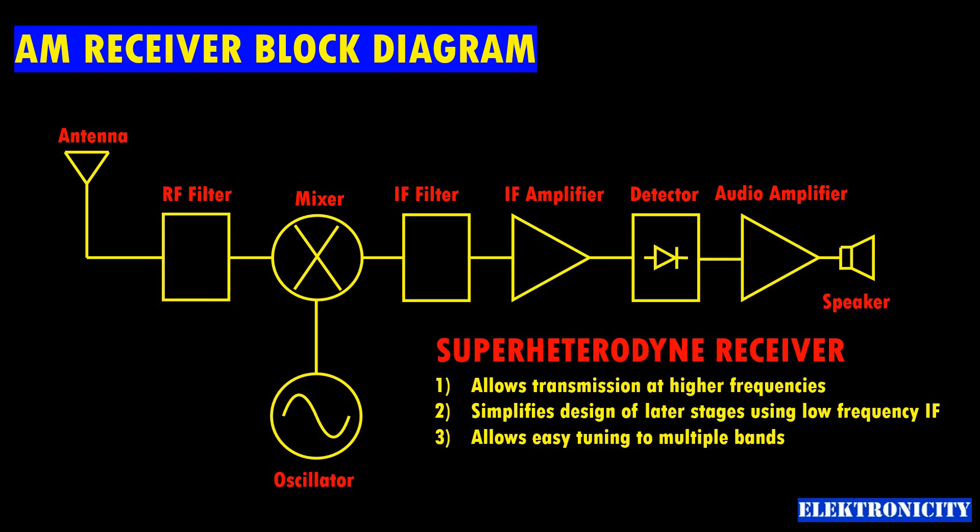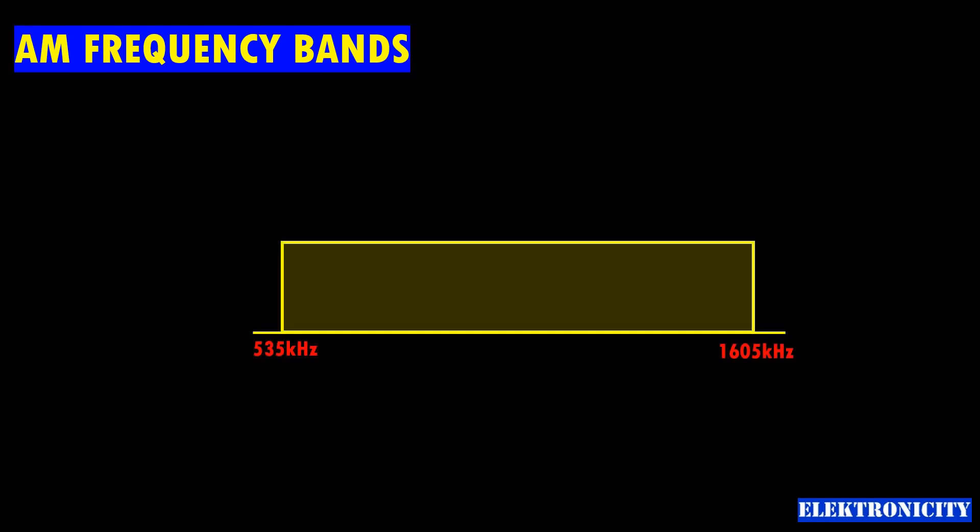The last point requires further explanation, and for that it's good to briefly study the AM communication frequency spectrum. The AM radio frequency range lies from 535 to 1605 kilohertz with a channel spacing of 10 kilohertz.